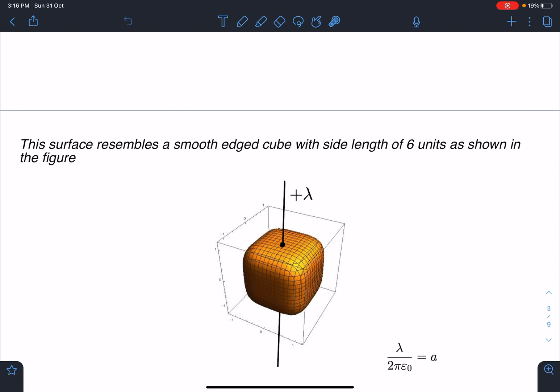Now you can see there is a wire passing through this and it is having plus lambda of this. And if you see minus 3 to plus 3, the side length of this cube, this length is 6. This is 6, this height is 6. Right. x is plus minus 3, y is plus minus 3, z is plus minus 3. So it is something like this.